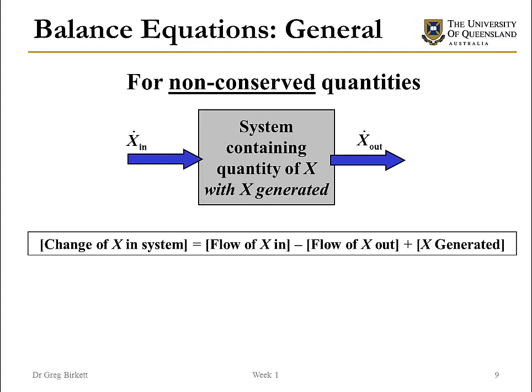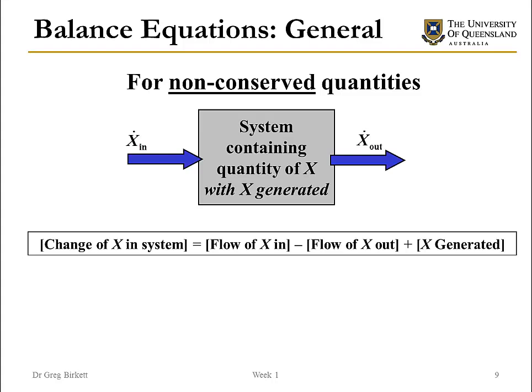For non-conserved quantities, what changes compared to the conserved case is this generation term — we're actually generating something within the system. So for balance equations, you're either in the former case where things are conserved, or the latter case where things aren't conserved and we can actually generate stuff within the system. There are four very common scenarios where we'll see that in this course.